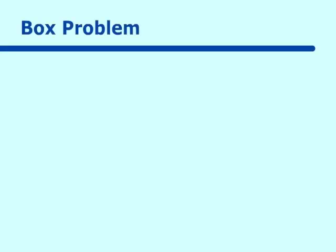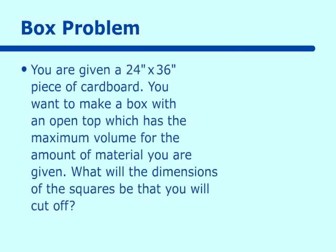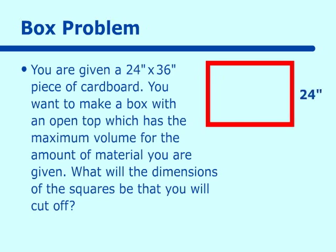Let's start our first problem — a basic box problem. You are given a 24-inch by 36-inch piece of cardboard. You want to make a box with an open top which has the maximum volume for the amount of material you are given. What will the dimensions of the squares be that you cut off? So this would be 24 inches and this would be 36 inches, and we are cutting off little squares. In essence, the bottom of our box will not be 24 by 36, but one side will be 36 minus the amount that you are cutting off.